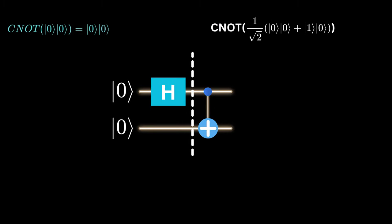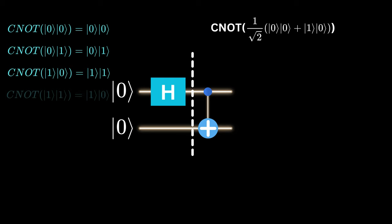We know that the CNOT of 0, 0 is 0, 0. CNOT of 0, 1 is 0, 1. CNOT of 1, 0 is 1, 1. CNOT of 1, 1 is 1, 0.